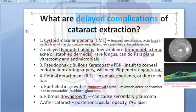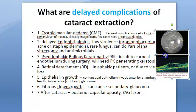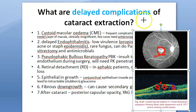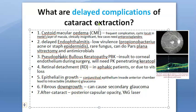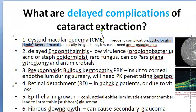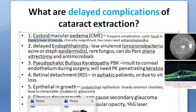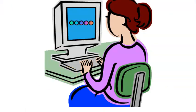Cystoid macular edema is a very frequent delayed complication but is usually clinically insignificant — nothing needs to be done. On fundus fluorescein angiography it shows a flower petal appearance in the macular area. On OCT, cystoid spaces are visible. The cysts form as cystic loculi in Henle's fiber layer of the macula.